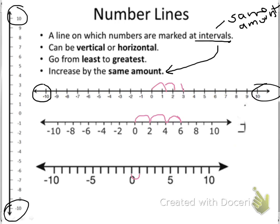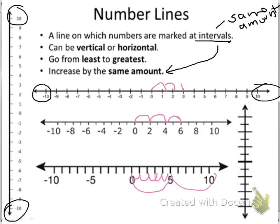Instead of going up by ones, it goes up by fives. You can count that there, or you can just count the fives. And one last example over here: our number line is a vertical number line, and it goes up by twos. Make sure you have everything on this page written down before you move on.